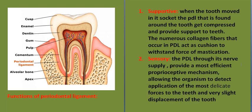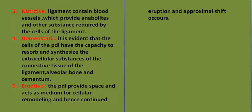Number two, sensory. The PDL, through its nerve supply, provides the most efficient proprioceptive mechanism, allowing the organism to detect the application of the most delicate forces to the teeth and very slight displacement of the teeth.